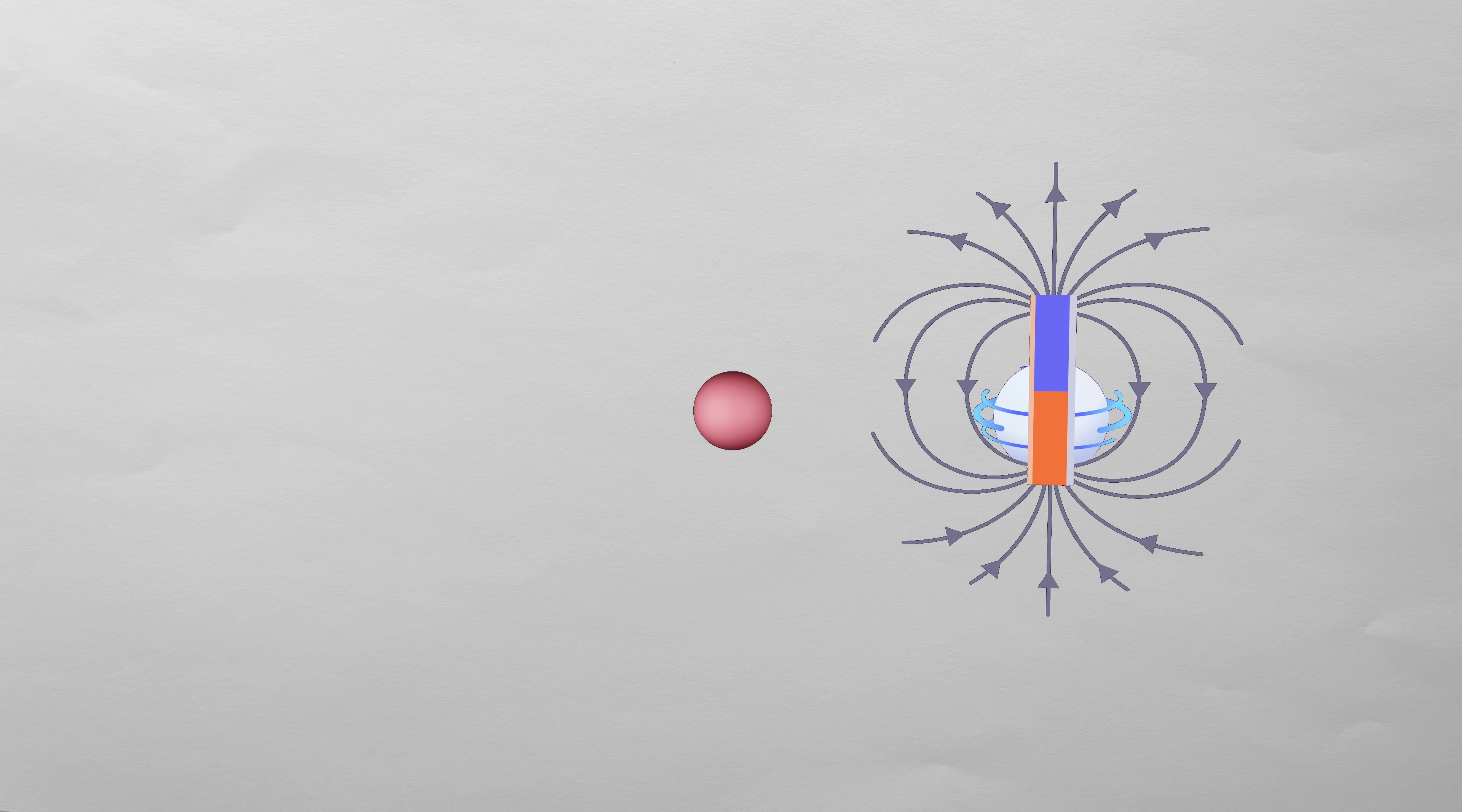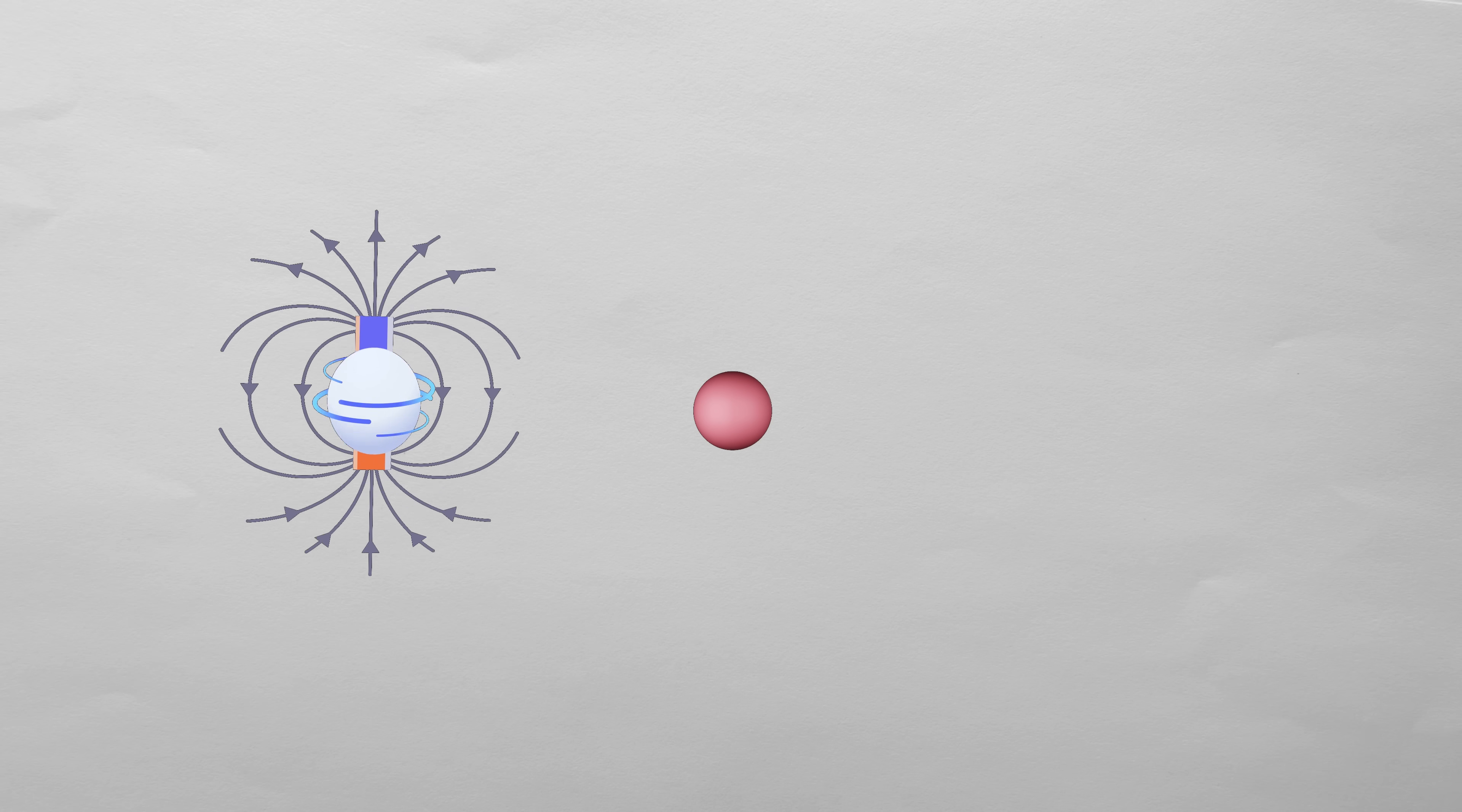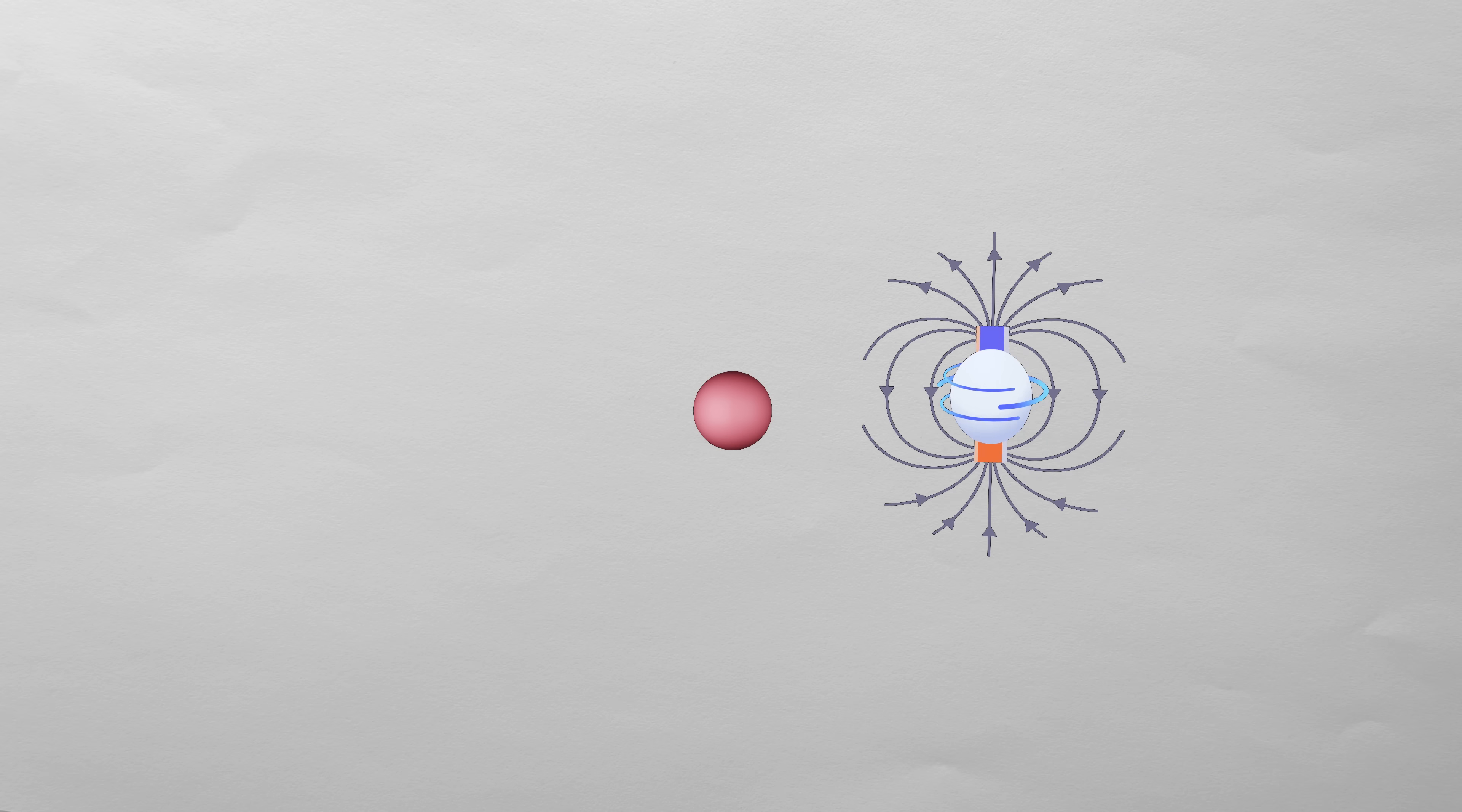So how do you actually flip electrons? Well remember, because electrons have spin, they also behave like tiny magnets. This means we can use an external magnetic field to flip their direction.